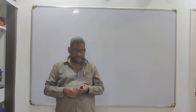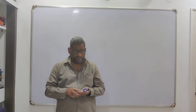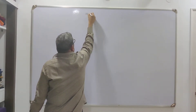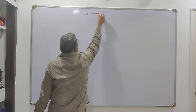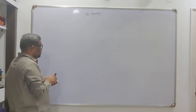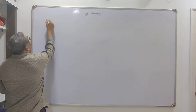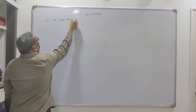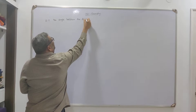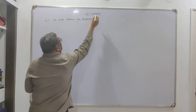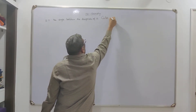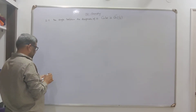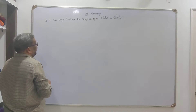Hi students, welcome to KSM classes. Today I will do one theorem from three-dimensional geometry. The theorem is: show that the angle between the diagonals of a cube is cos inverse of 1 by 3. Now I will go with the proof.